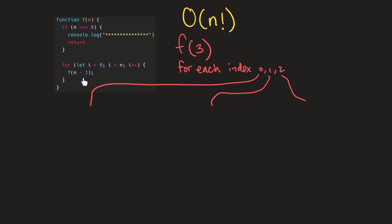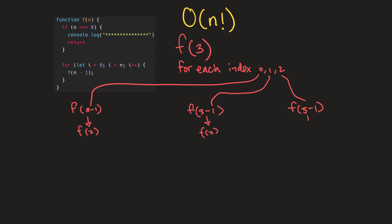If you look here, we're subtracting one from n that we're passing to the function at each iteration of this for loop. So if n is three here, for each of these calls n is going to be equal to two, because we subtract one each time. So these are actually going to be f(2). And for each of these, we're going to do the same thing that we did for the first call to this function.